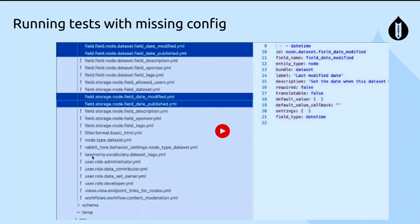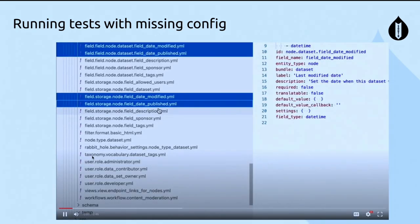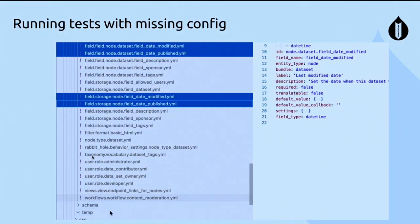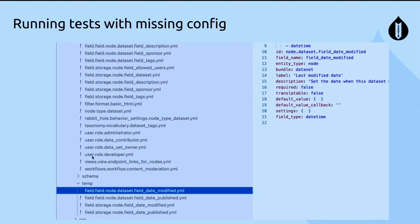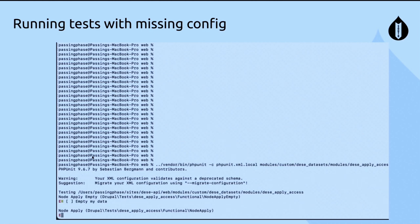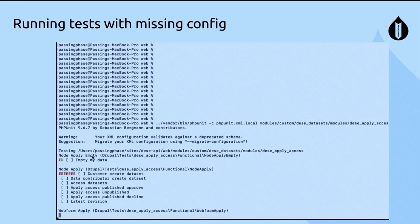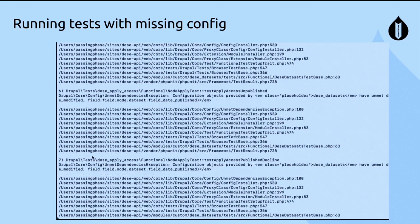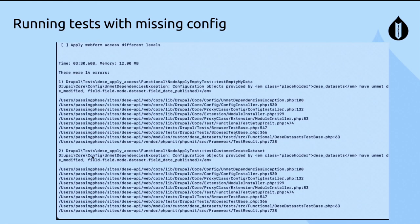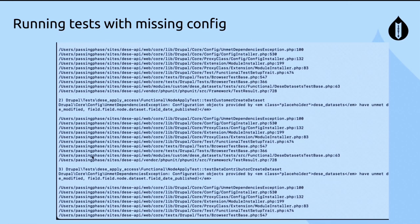We reverse engineer this by taking configs out of the config install directory and casting them aside into a temporary directory, then run our tests. We get the red letter of death — all tests erroring out for the same reason. We can see we're missing the fields 'date published' and 'field date modified' — the two fields we just removed.